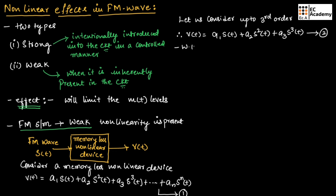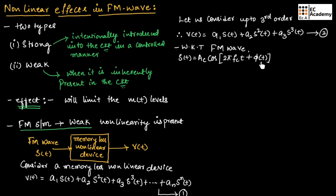We know that an FM wave can be written as S(t) = Ac·cos(2π·Fc·t + φ(t)). This is the expression for the FM wave, where φ(t) is the phase of the signal. Let us call this as equation number 3.